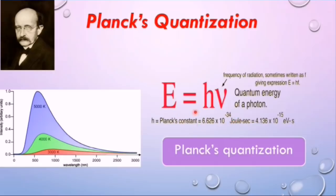He postulated E equal to h nu, where nu is the frequency of electromagnetic radiation and h is Planck's constant, its value is 6.63 into 10 raised to the power minus 34 joules into seconds.